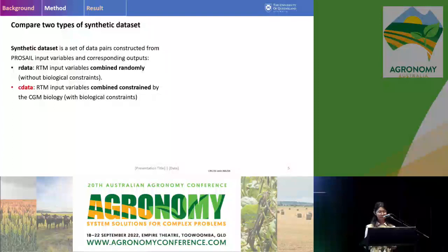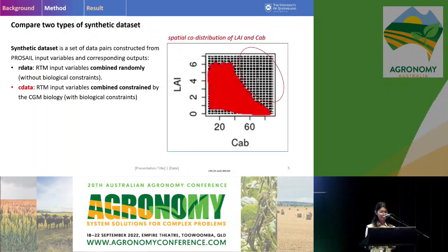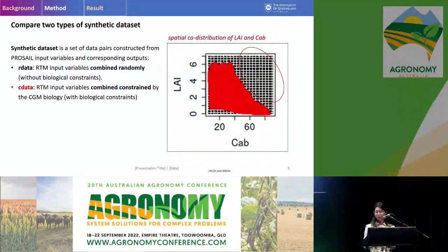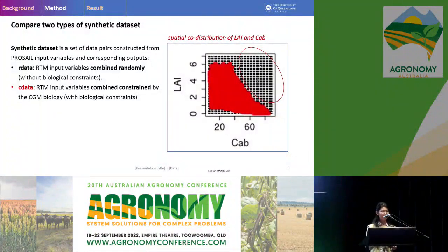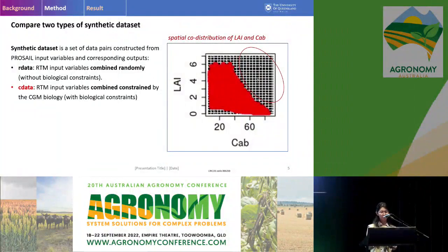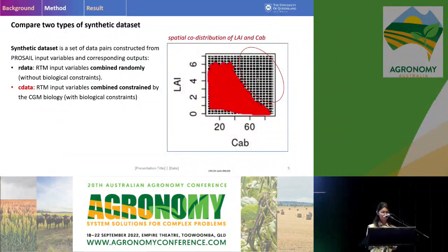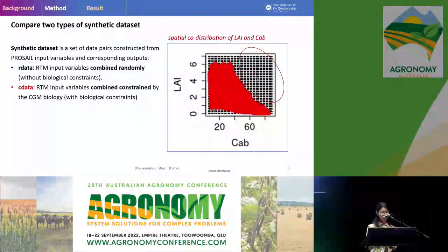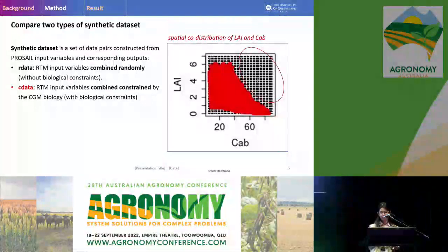The main difference between these two synthetic datasets — with and without biological constraints — lies in the combination of the input variables of the RTM. For the dataset without biological constraints, the input variables are combined randomly. But for the dataset with biological constraints, the input variables are constrained by the biology defined in the crop growth model. Here I will show you an example for these two datasets.